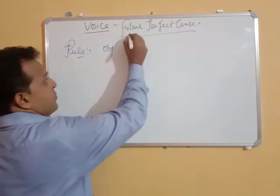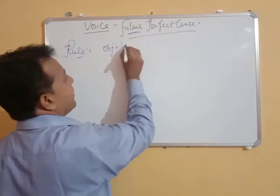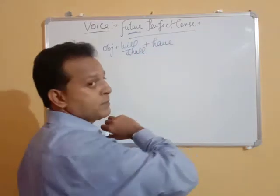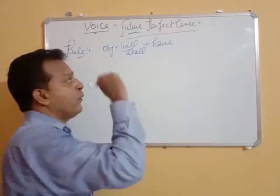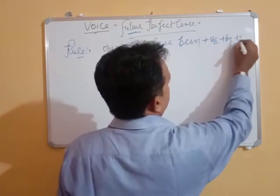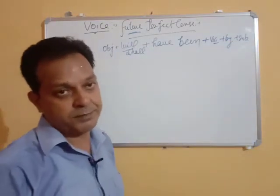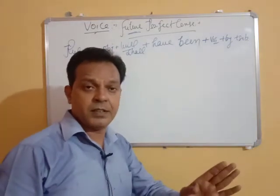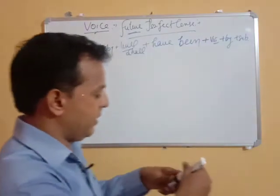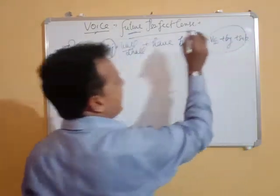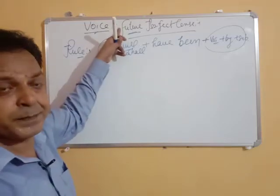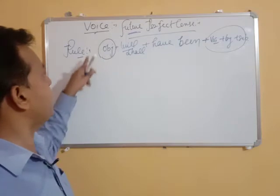The object always comes first. Future will tell us what 'will' or 'shall' to use. Perfect will tell us 'have' comes here. And 'been' is added for passive voice. This is common in every passive form. So the structure is: Object + will/shall + have + been + V3. 'Will/shall' gives us the future, 'have' gives us the perfect, and 'been' makes it passive.